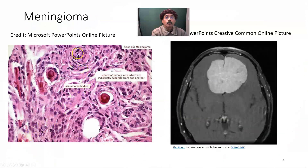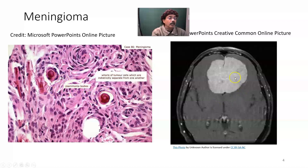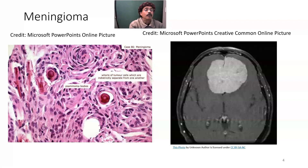Here is the histopathological picture showing the whorl pattern of tumor cells, which are distinctly arranged in groups. This is the whorl pattern. We can also see the psammoma bodies — concentric substances — here and here. And this is the MRI of a person with meningioma. This is the mass — the meningioma is visible here.